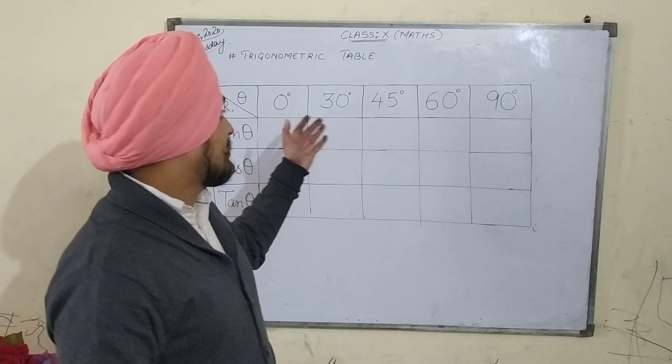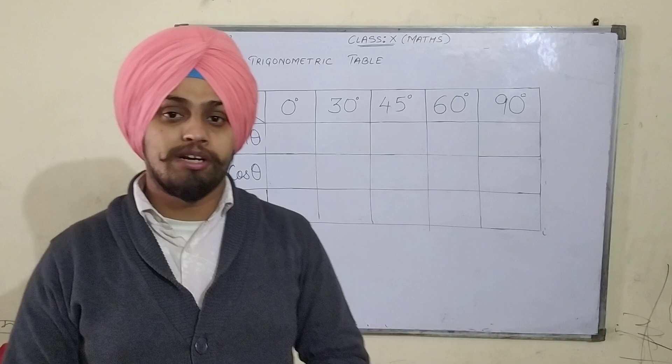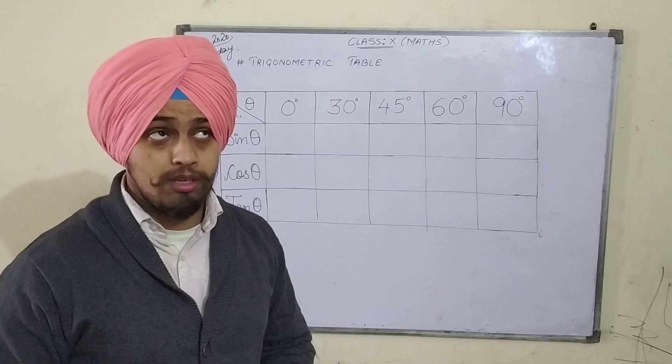Hello everyone. Today I am going to discuss the trigonometric table. Generally students struggle to remember the values of different trigonometric ratios at different standard angles, that is 0 degree, 30 degree, 45 degree, 60 degree, and 90 degree.